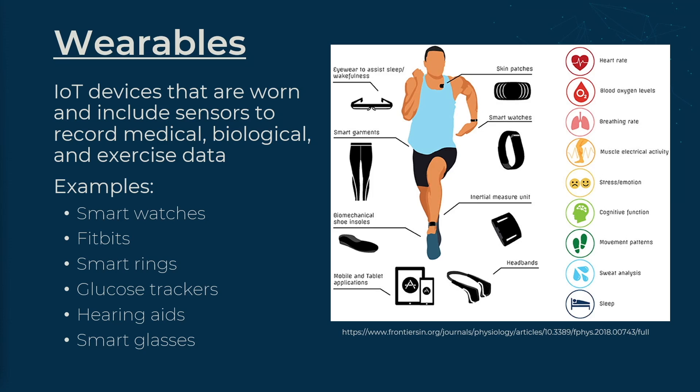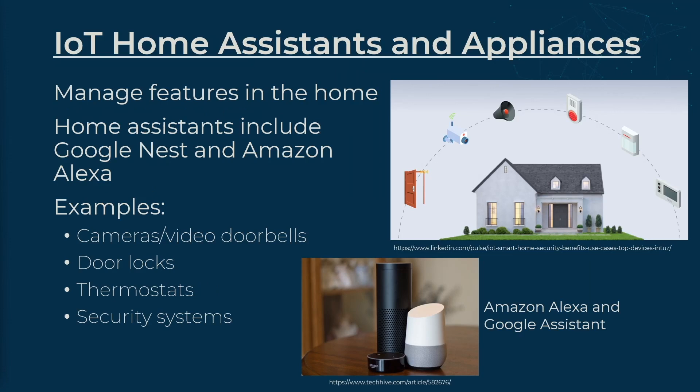These devices have changed modern-day computing. IoT home assistants like Amazon Alexa help manage various features in your home. They can control devices such as cameras, door locks, and even thermostats, allowing you to adjust settings like security and temperature. These assistants connect to your home Wi-Fi and can be operated through a central console for easy remote management of your smart home.